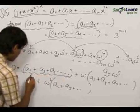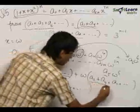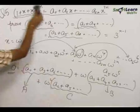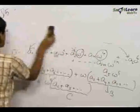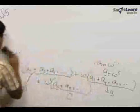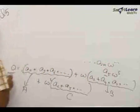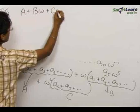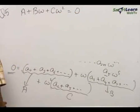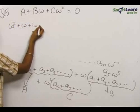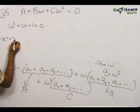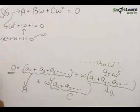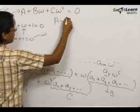Let us call A = a₀ + a₃ + a₆ + ..., B = a₁ + a₄ + a₇ + ..., and C = a₂ + a₅ + a₈ + ... We need to prove A = B = C = 3^(n-1). We have A + Bω + Cω² = 0. We also know that 1 + ω + ω² = 0, since ω is a root of x² + x + 1 = 0. Comparing these two equations, we get A = B = C.